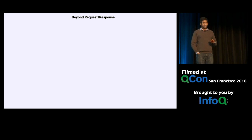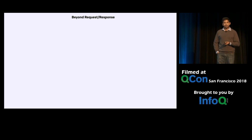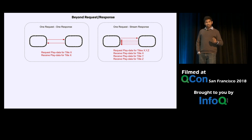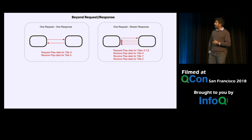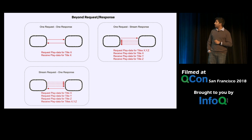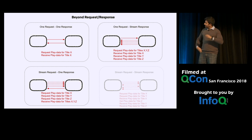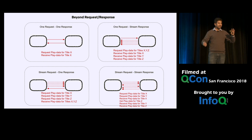There are use cases that go beyond request-response. For the same play data call, you could define an API that accepts play data requests for titles X, Y, and Z, then streams the response back as play data becomes available for each title — a request-stream pattern. Or you can flip it: devices request play data as needed, we collate all the requests, and send a single response back — a stream-request pattern. And finally, you can have streaming on both sides, where devices request play data as needed and the service responds as it's available — a bi-directional stream pattern. If any of these stream-specific API patterns fit one of your business domains, it's worth considering an asynchronous architecture.